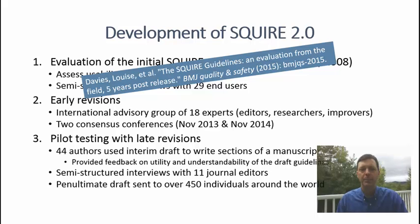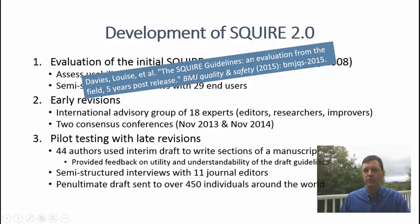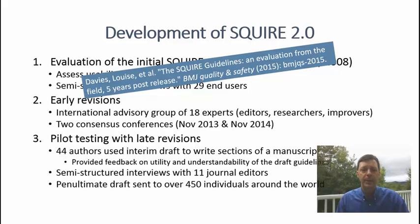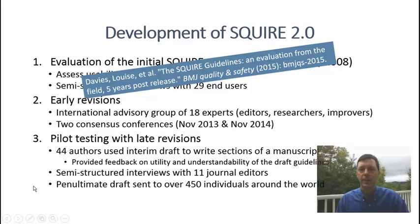This led to our third phase: pilot testing with late revisions. We enlisted 44 authors who used an interim draft to write sections of a manuscript, submitted those sections to us, and we analyzed them. The authors also provided feedback on the utility and understanding of the draft guidelines. Additionally, we had semi-structured interviews with 11 journal editors. A penultimate draft was then sent to over 450 individuals around the world and posted on the SQUIRE website for public comment. All of this feedback was used to create SQUIRE 2.0.